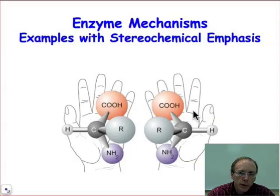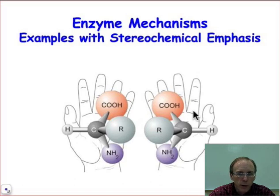Enzymes usually perform their chemistry with stereochemical control, but the differences in substrate recognition and reactivity that give rise to one stereochemical outcome versus another can be quite small, as we'll see in this webcast and the upcoming webcast. We're basically going to learn that these differences arise from being able to recognize different enantiotopic or diastereotopic faces or other prochiral elements in substrate molecules.